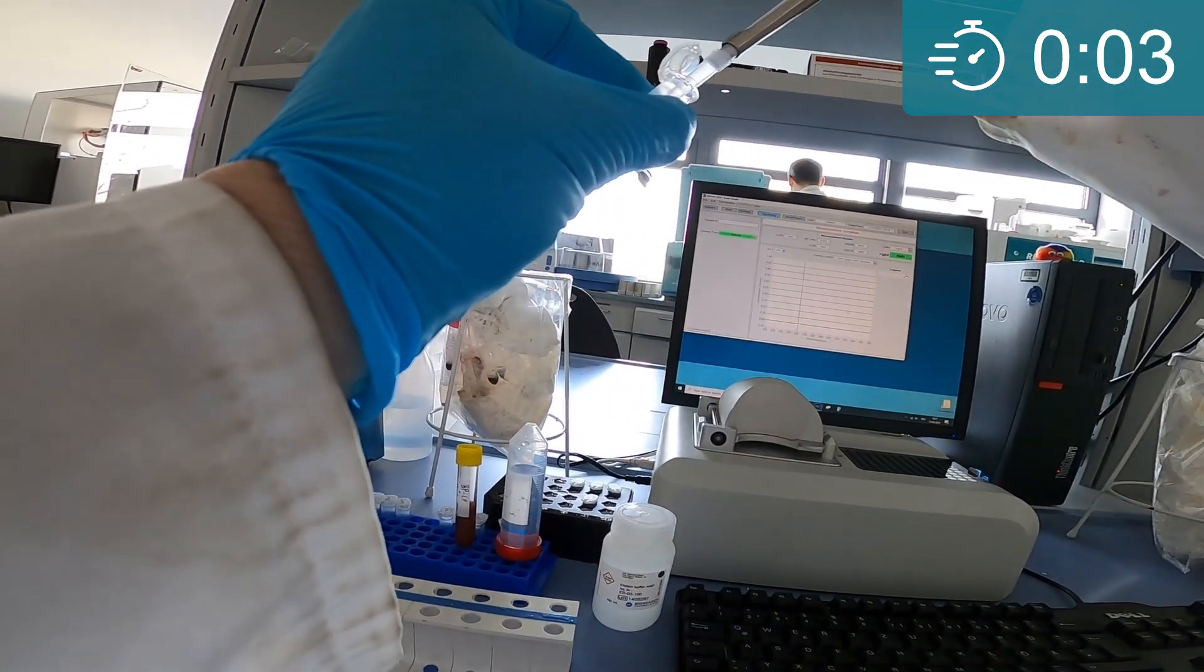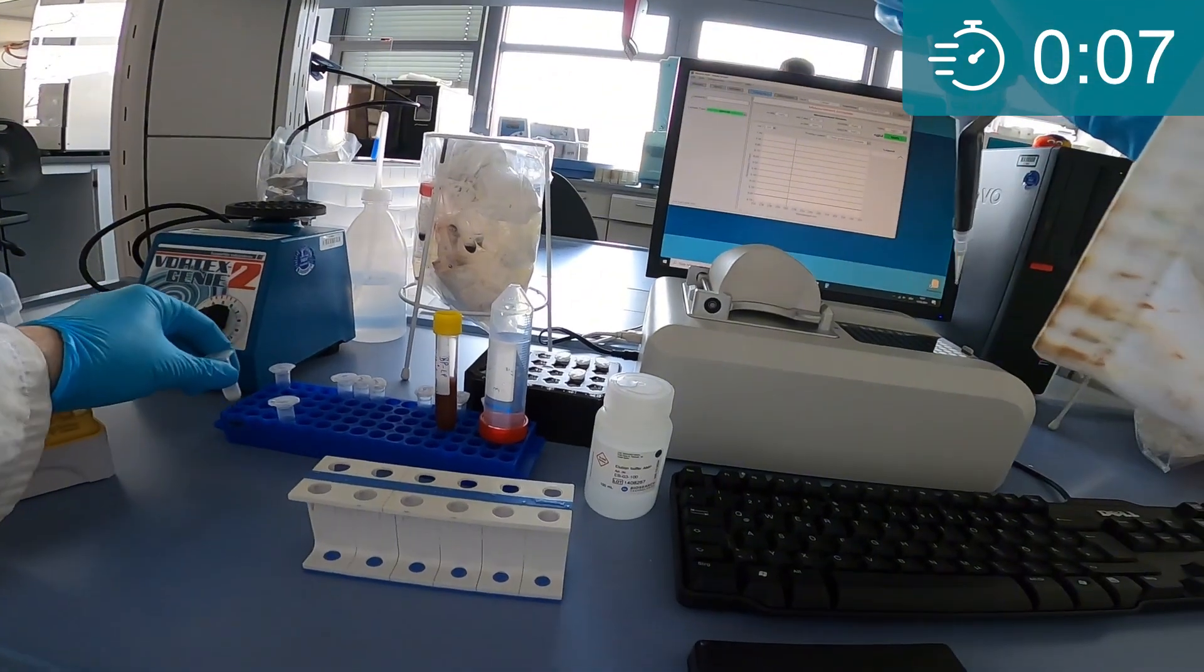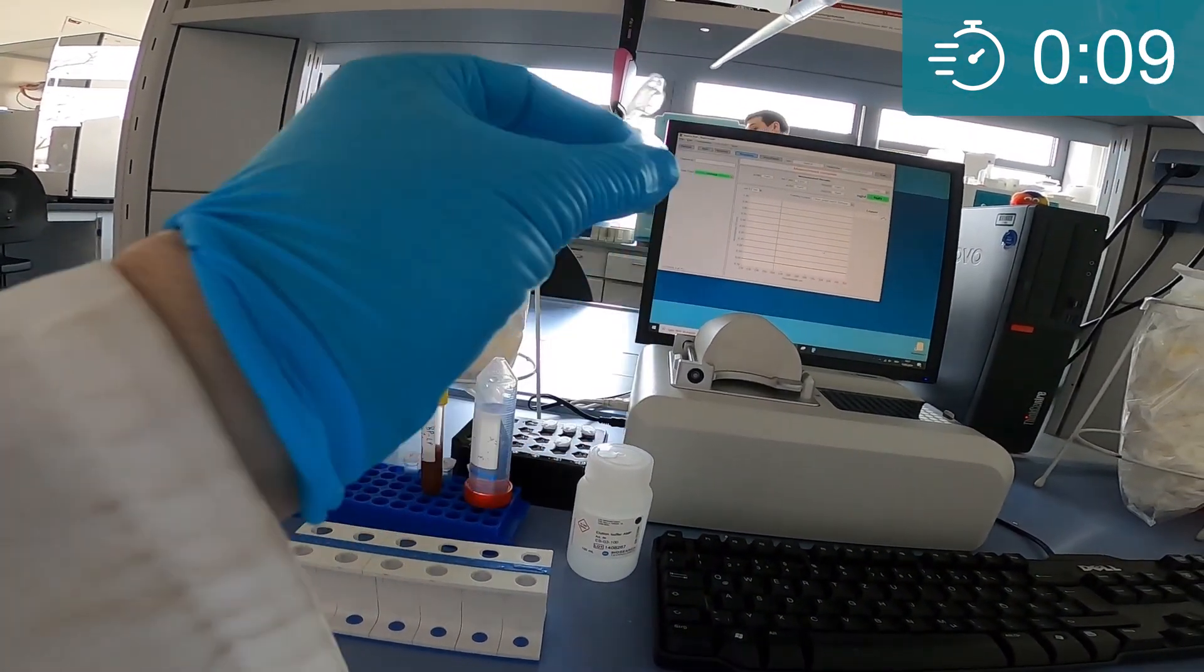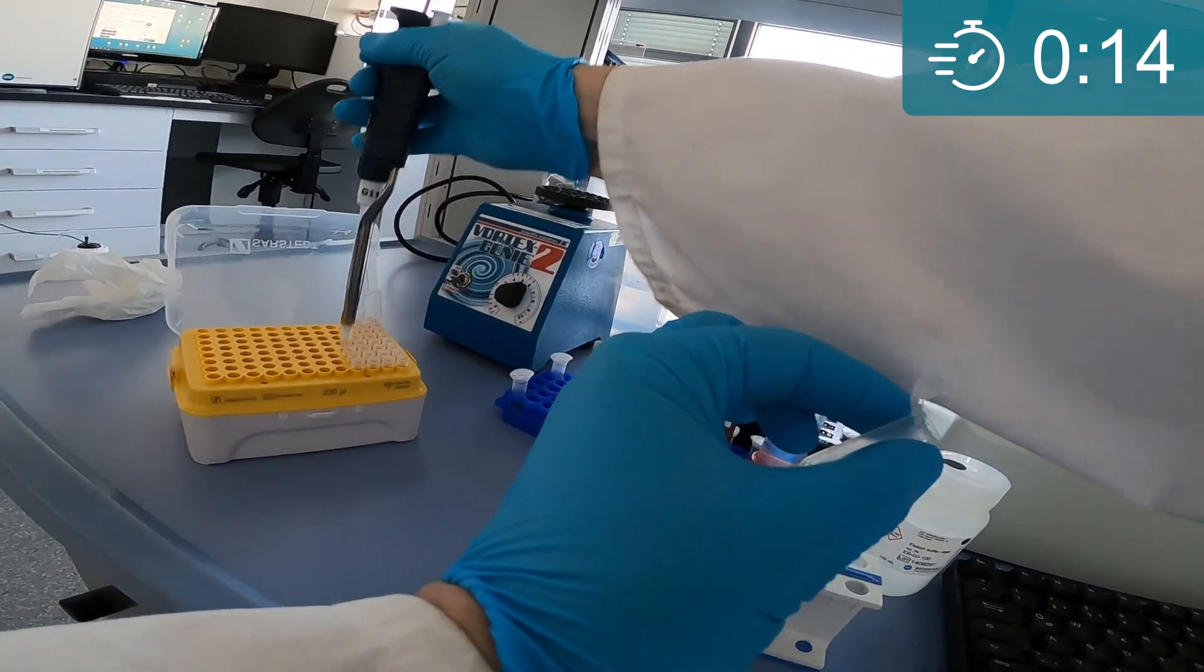The first step is to transfer the clear lysate, free of cell debris, to a new tube. The lysate contains the ground-up canola seed sample and one of our six novel lysis buffers.